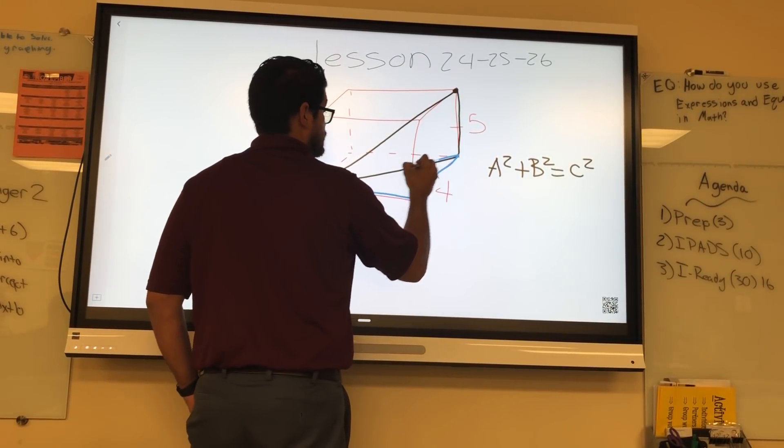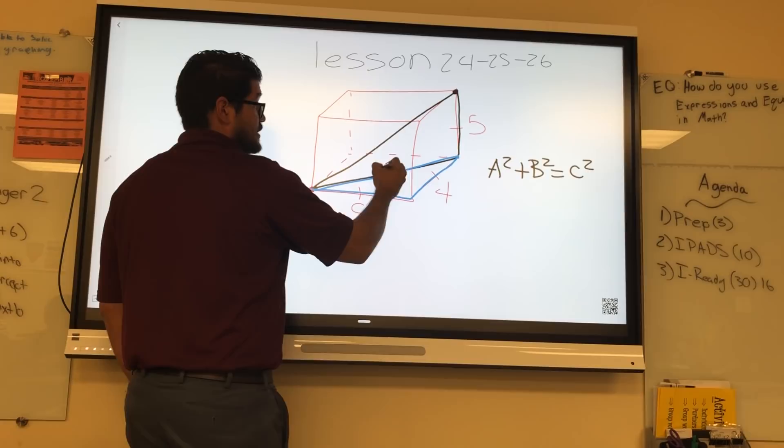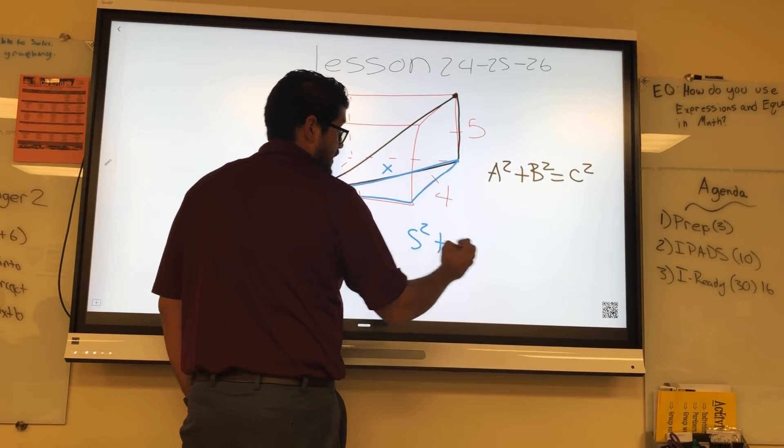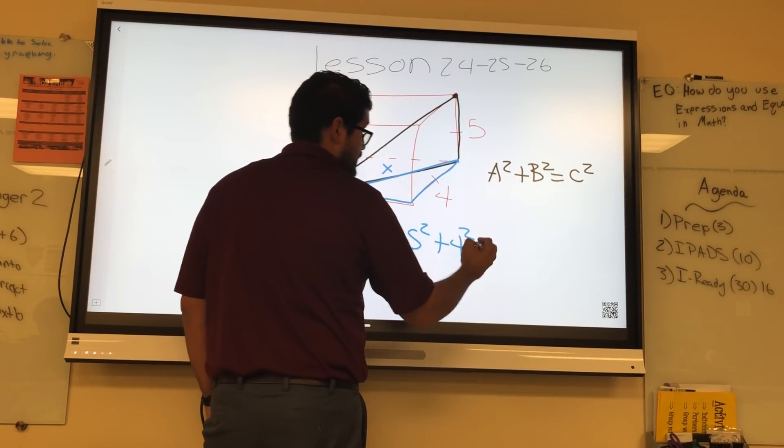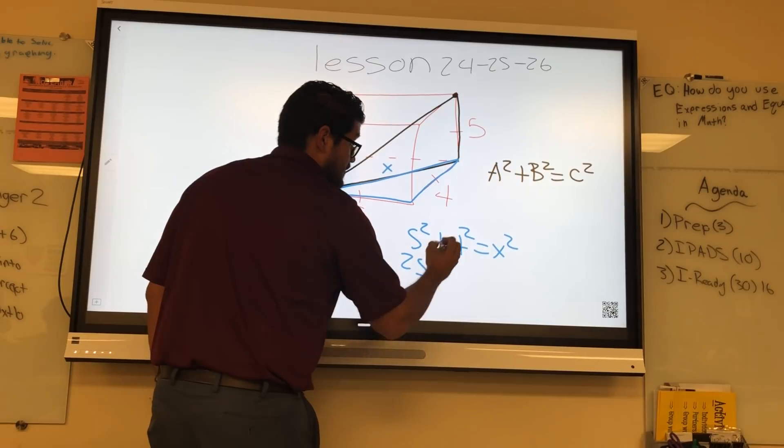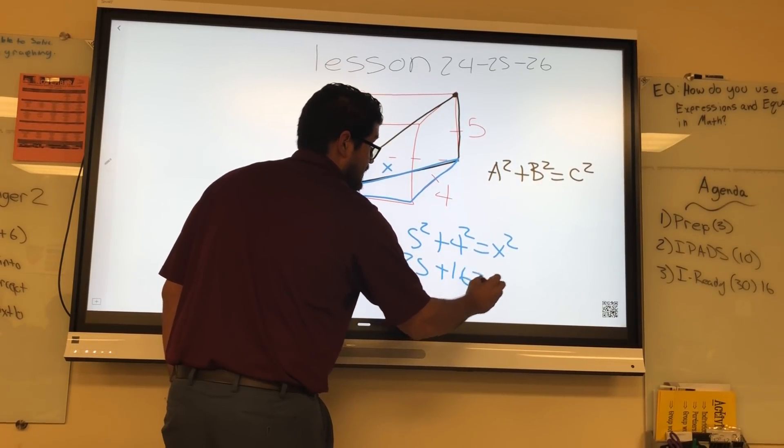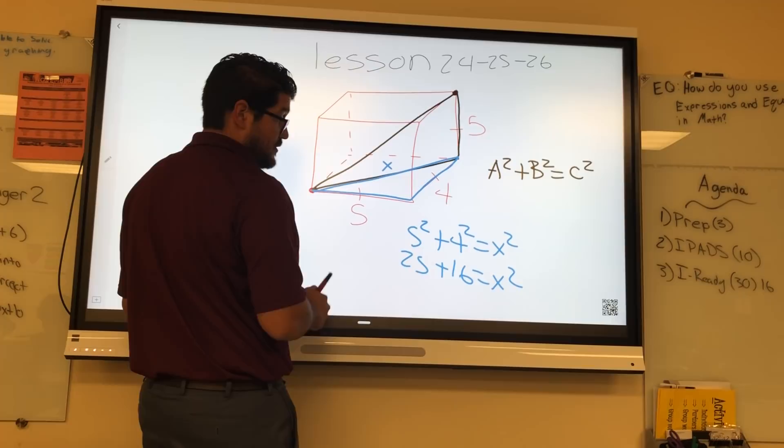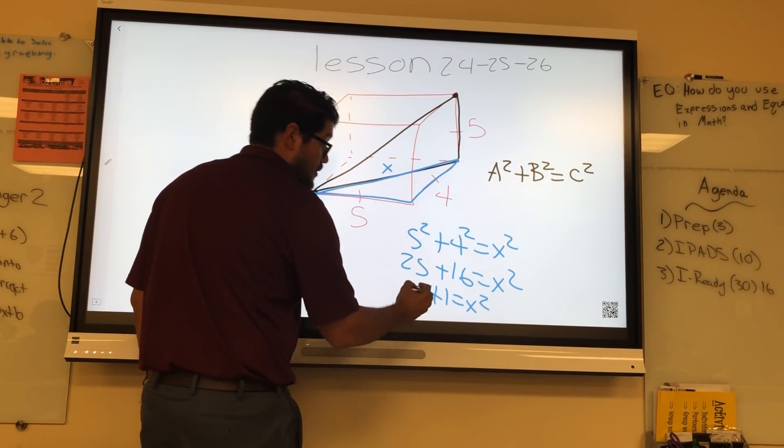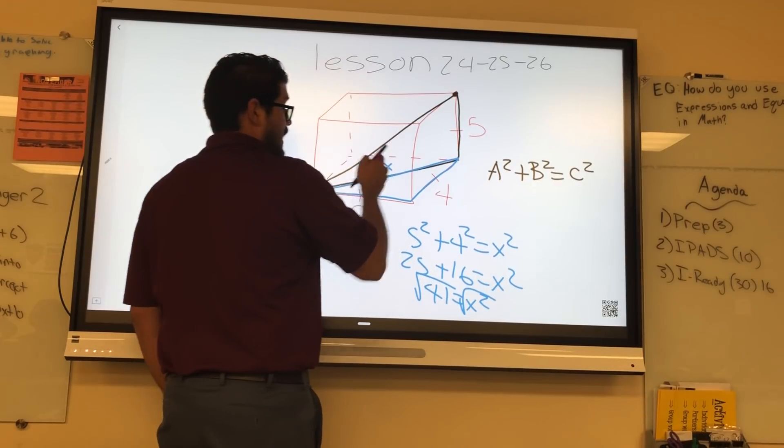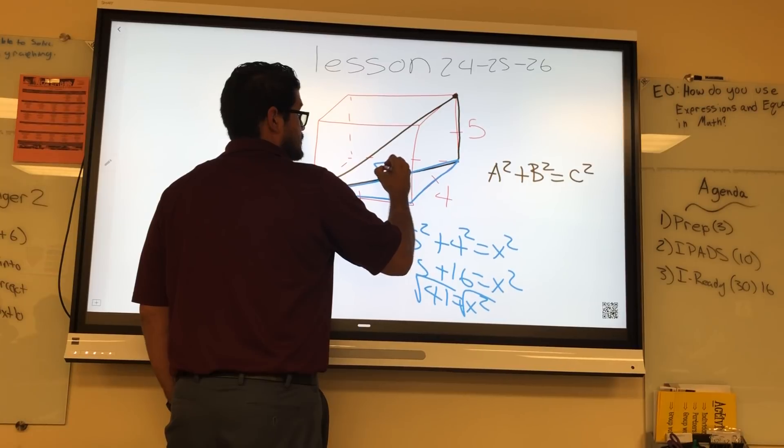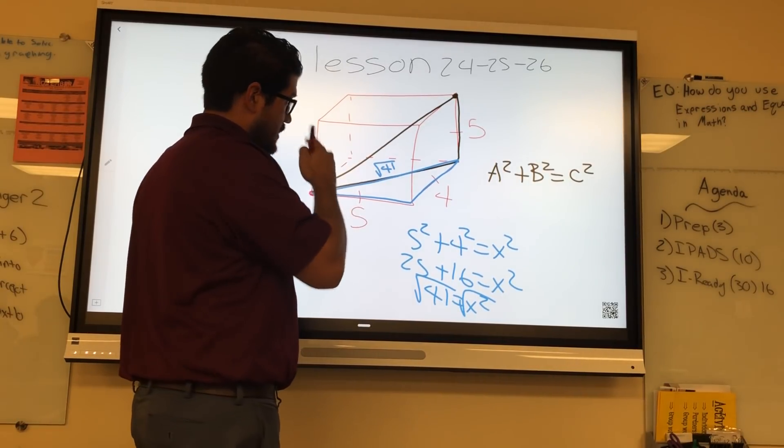So first Pythagorean's theorem we're going to do is this bottom one, which I'll mark in blue. This right triangle right here. So the hypotenuse is our mystery. So it's just going to be A squared, which is 5, plus B squared, which is 4, equals C squared, which is X. This is going to be 25, this is going to be 16, and this is going to be X squared. You add these together, you're going to get 41 equals X squared, and then you're going to square root. So I know the length of this is the square root of 41. So now I know that this is the square root of 41. Alright?